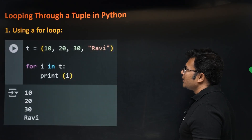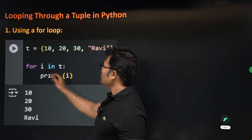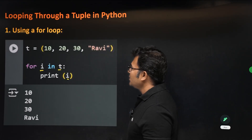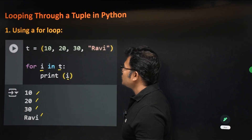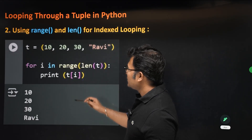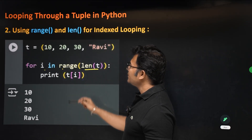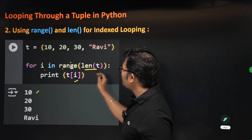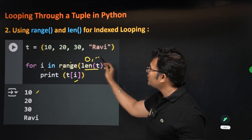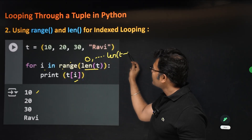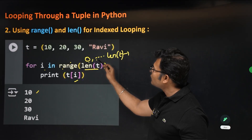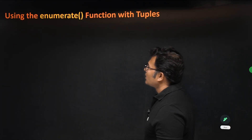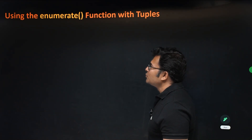There are various ways to loop through a tuple. You can use a for loop: 'for i in t: print(i)' to print all elements one by one. You can also use range and len: 'for i in range(len(t)): print(t[i])' — range generates from 0 to len(t)−1, so all elements 10, 20, 30, and 'ravi' will be printed.